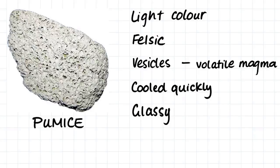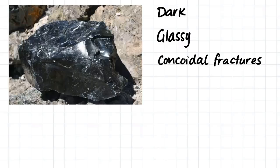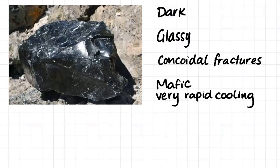This rock is dark and glassy and shows conchoidal fractures over its surface. We can say that it would have formed through a mafic magma which has experienced very rapid cooling. This sample is obsidian.